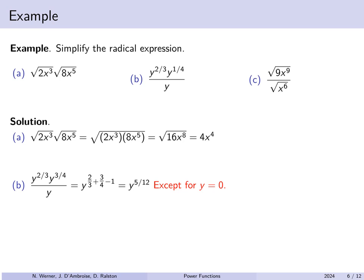Here we see why the 'provided they exist' caveat matters. Zero to the 5/12 exists — it equals zero — but on the left, the original expression has y in the denominator, so y = 0 would cause division by zero. For any number other than zero these expressions are equal, but for y = 0, the starting expression doesn't exist.